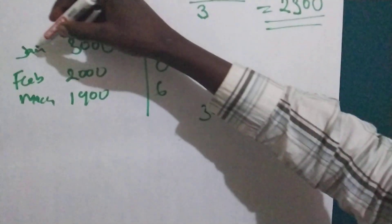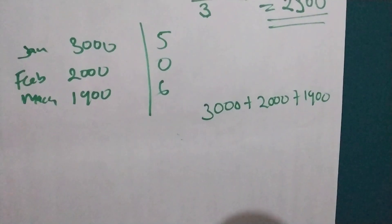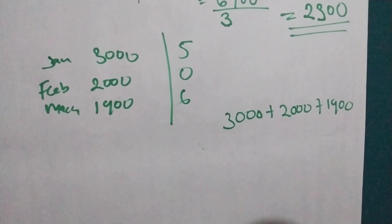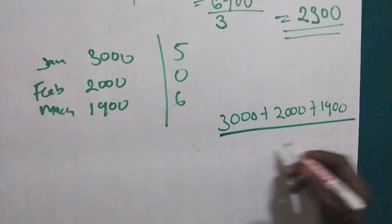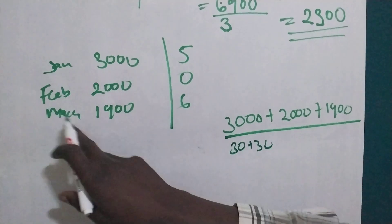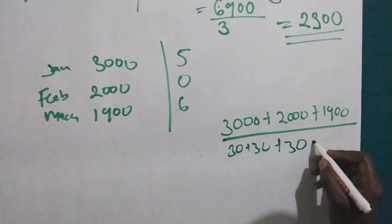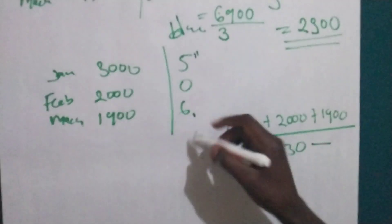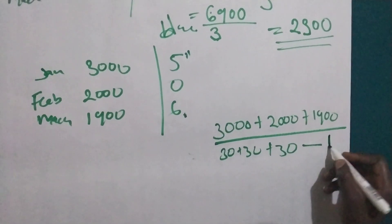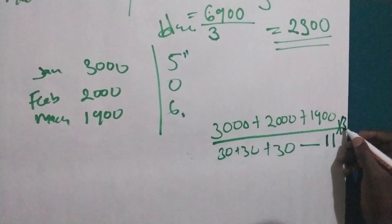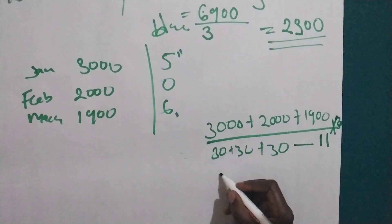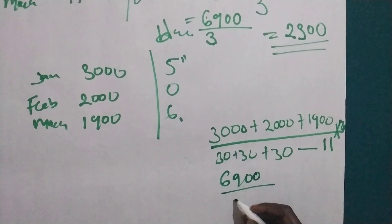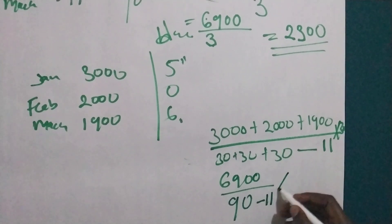We calculate consumption per day and then multiply by 30. We consider all months as having 30 days, so 30 plus 30 plus 30 equals 90 days total. Then we subtract the stock-out days. The stock-out days total 11. So the formula becomes: 6900 divided by (90 minus 11) times 30.